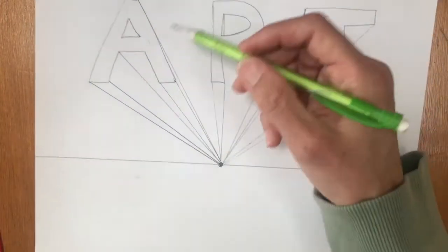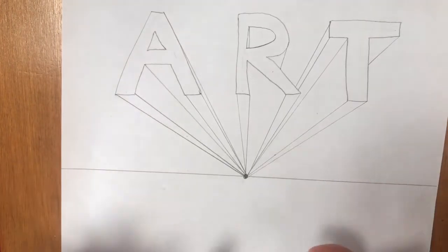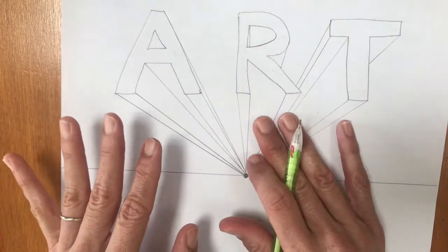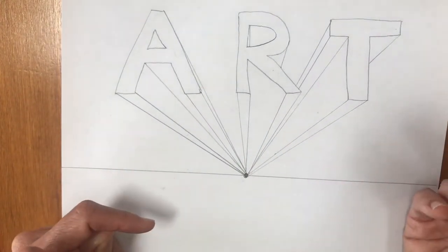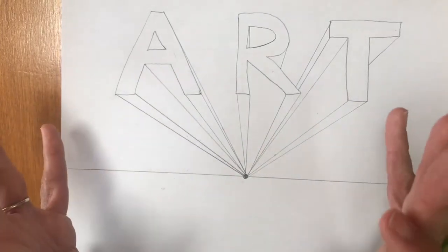So those are all the letters that I am going to connect to my vanishing point. Now you can leave it like that. That looks pretty cool and you can start to add colors and designs or patterns. You can use markers, crayons, colored pencils, or just your pencil. You can use paint. You could do anything you would like to do with it.